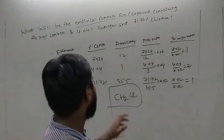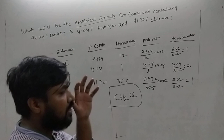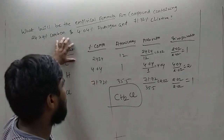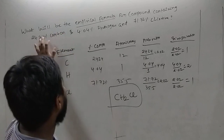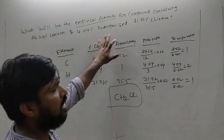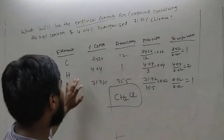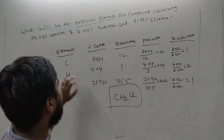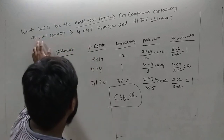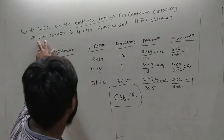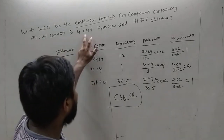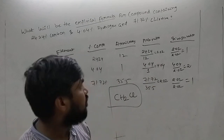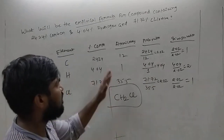Once again, let me repeat. Whenever you want to calculate the empirical formula, you first identify the elements in the problem: carbon, hydrogen, and chlorine. Then write the percentage composition — carbon 24.24%, hydrogen 4.04%, and chlorine 71.72%.